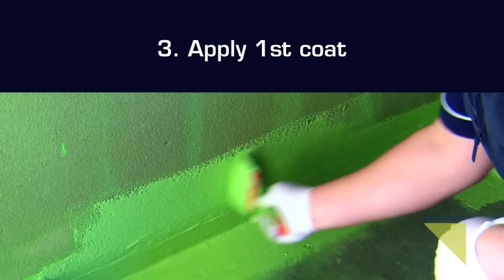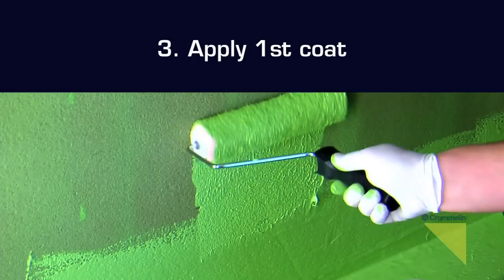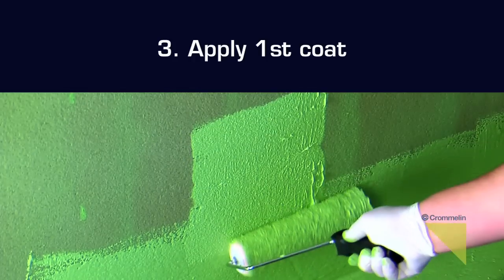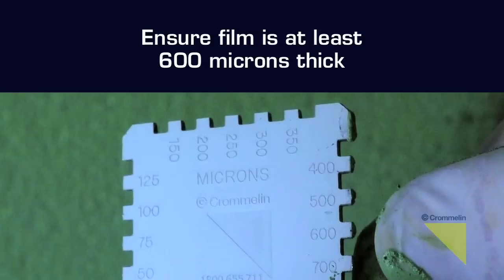Step 3: Apply a full coat to both walls and base, ensuring the coverage rate is followed. Film thickness can be checked with a wet film gauge.